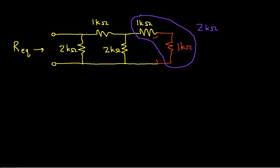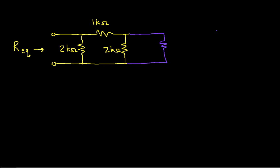Okay, so again, I can combine or eliminate the series combination of these 2k ohm resistors and replace them with a single 2k ohm resistor. And you can see probably where this is going.